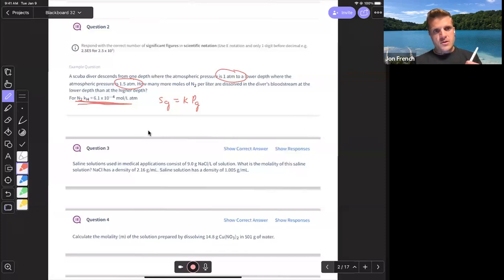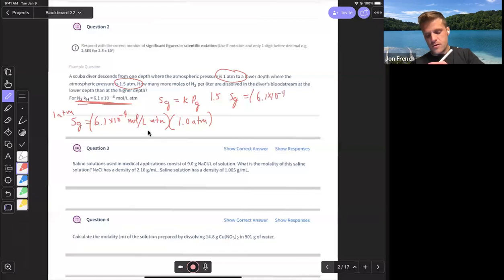This equation is on the exam, it's on the practice exam. Solubility at one ATM equals 6.1 times 10 to the minus four moles per liter atmosphere times one ATM. Do the same calculation at 1.5 ATM to basically see we're going to have more. Solubility of the gas equals 6.1 times 10 to the minus four moles per liter atmosphere times 1.5 ATM.